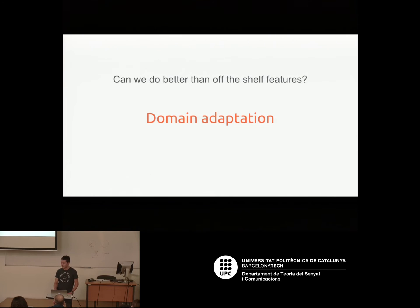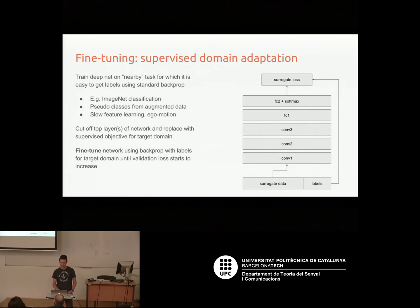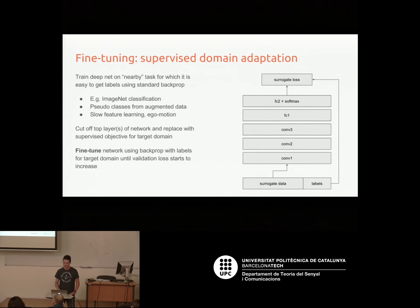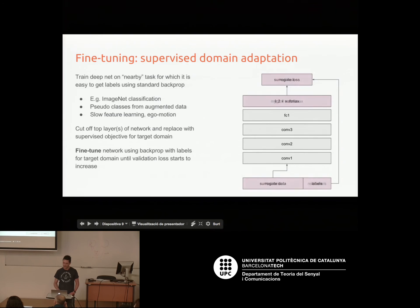Can we do better than off-the-shelf features? This is called domain adaptation. The idea is to train a network on a nearby task for which it's easy to get labels — ImageNet classification, or pseudo classes as Ava mentioned — to get a network initialized in a good place. Then we cut off the top layer, replace it with a supervised objective, and instead of using features off-the-shelf, we fine-tune: we use backpropagation through the whole network with the data, labels, loss function, and classes we care about, while keeping all lower layers initialized with their pre-trained weights.